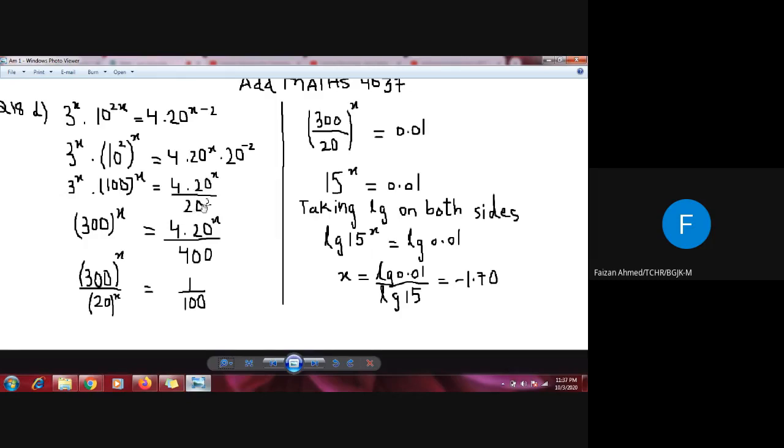Now applying the law of indices, the powers are the same, x and x, so I multiply the coefficients: 3 multiplied by 100 equals 300. So 300 to the power x equals 4 multiplied by 20 to the power x, and the square of 20 is 400.